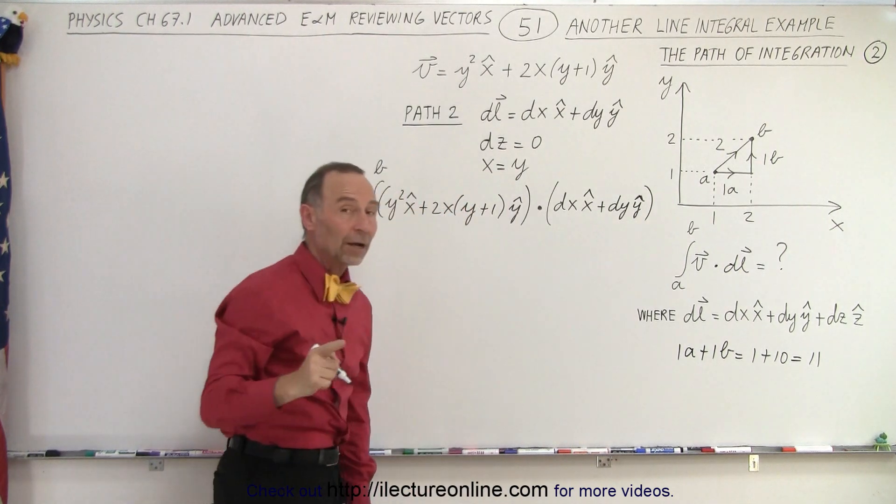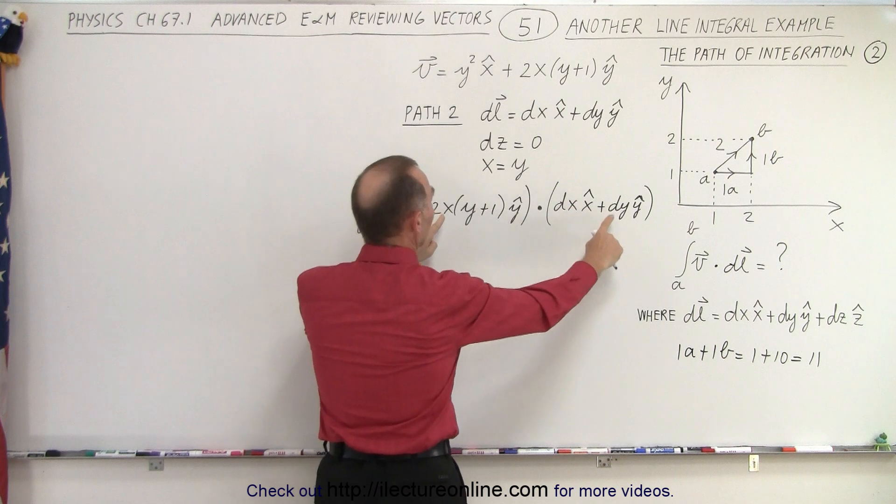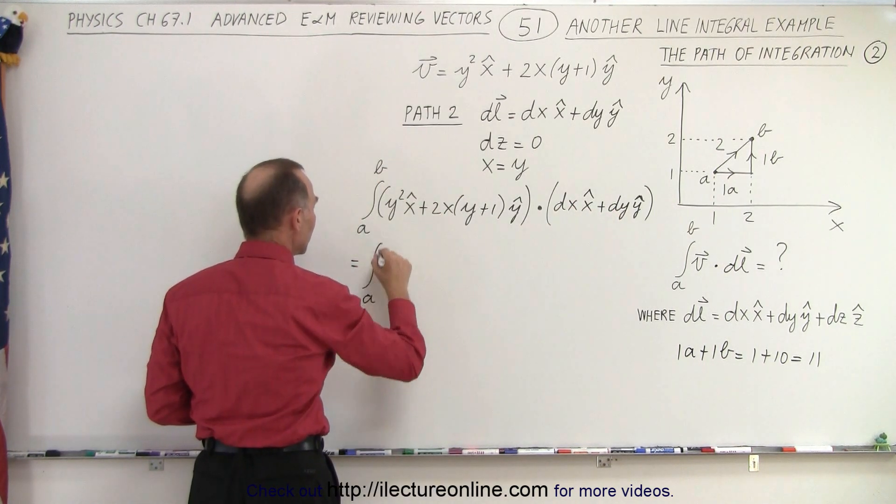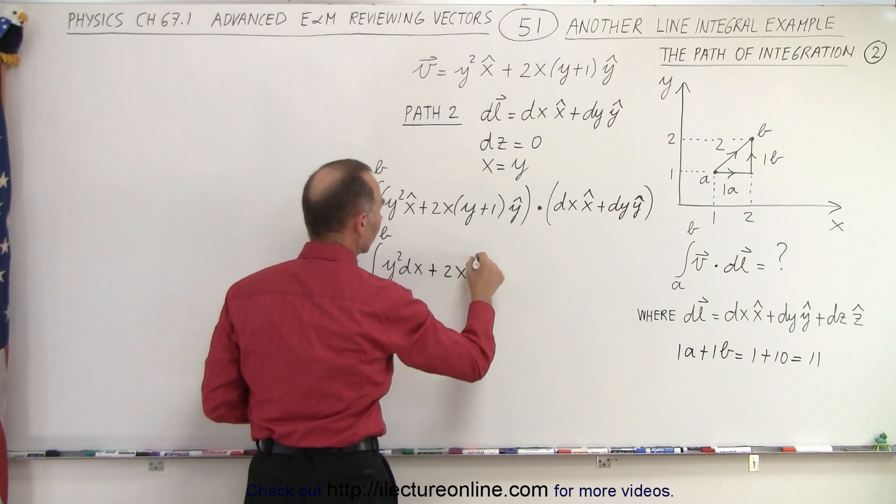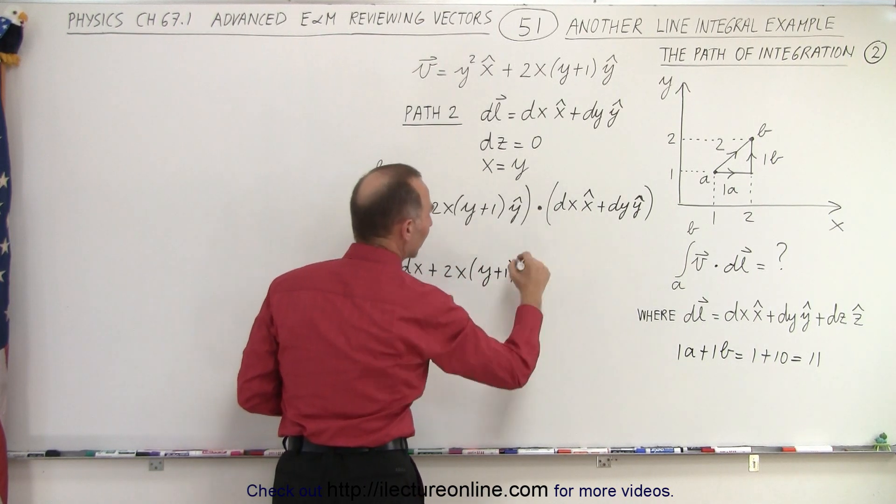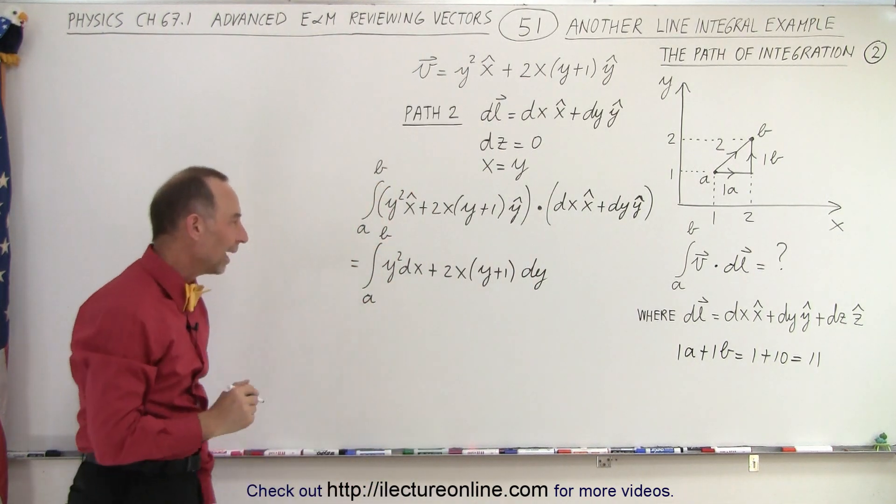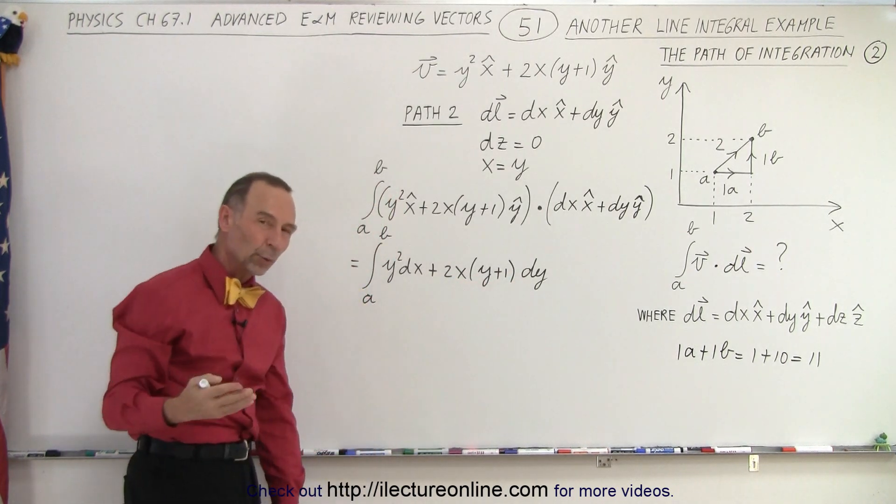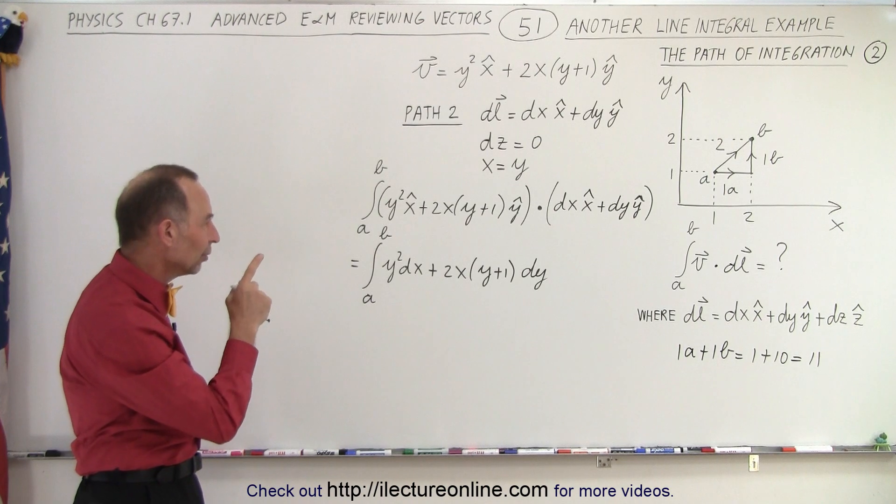In this case, DL is equal to dx in the x direction plus dy in the y direction. So notice we are now going to have two products: the product of the x components in the x direction and the product of the y components. So this is equal to the integral from A to B of y squared times dx plus 2x times y plus 1 times dy. Now notice that here we have a y squared dx and here we have an x times dy. That doesn't quite work. We need to somehow change that to a single variable.